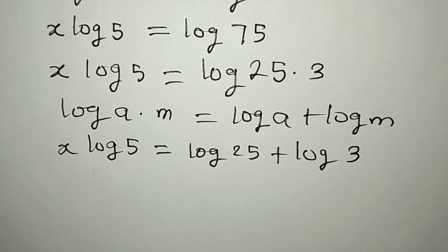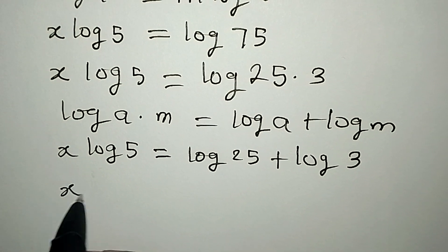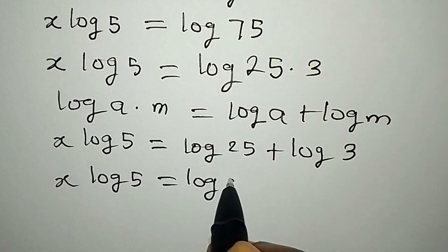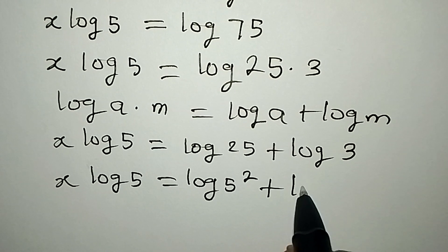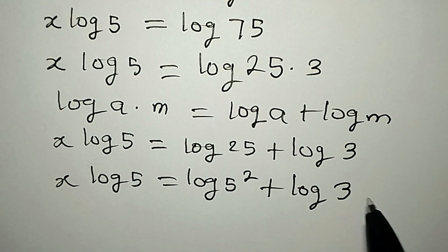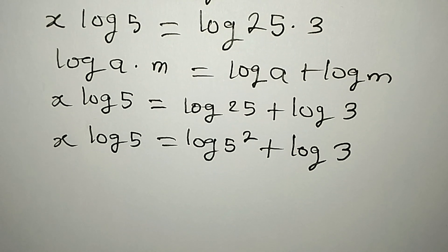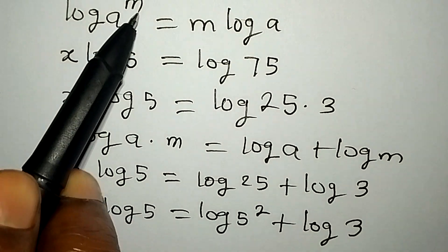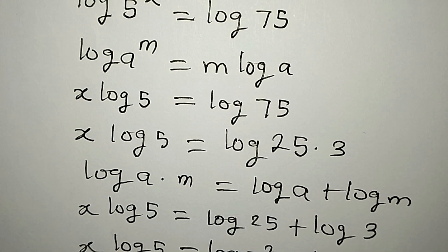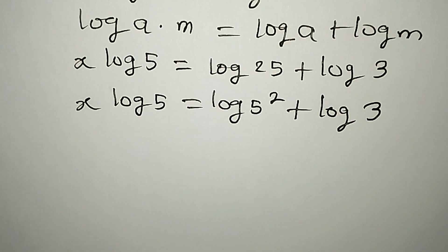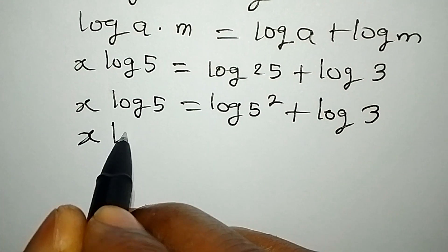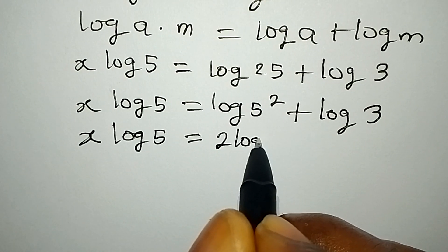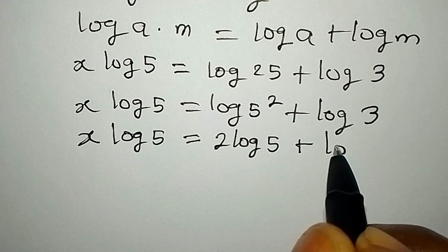Now, log 25 is log of 5 squared. The power can always come out in front, just like we applied the law earlier. So x log 5 will be equal to 2 log 5 plus log 3.